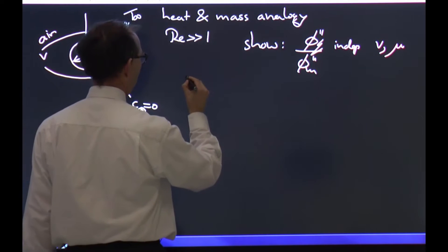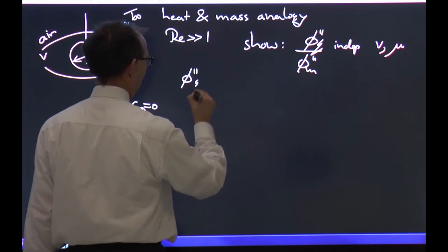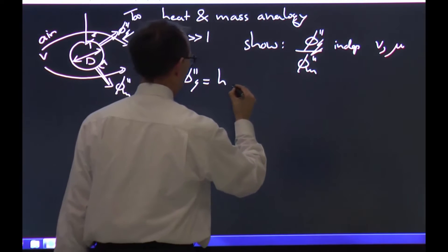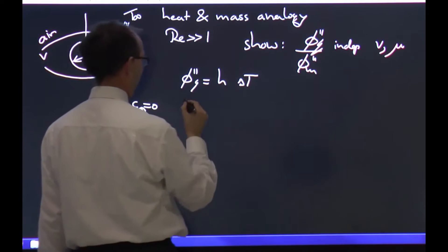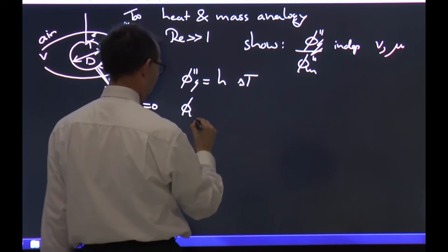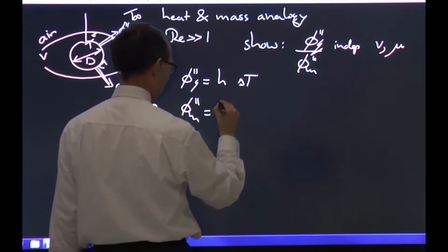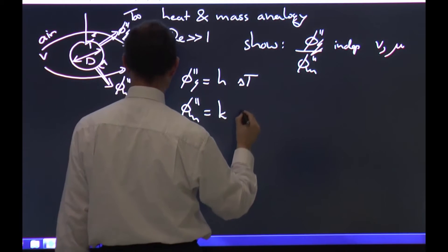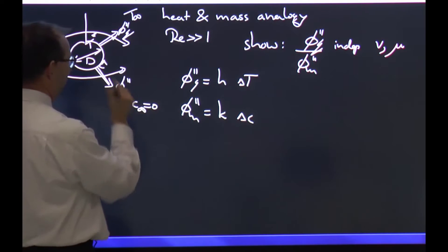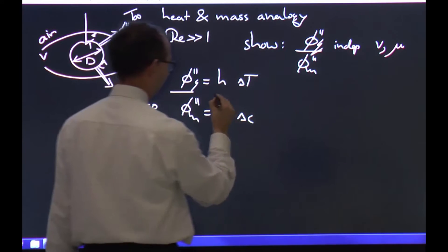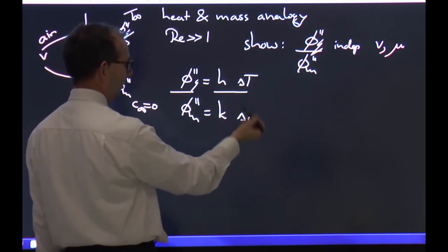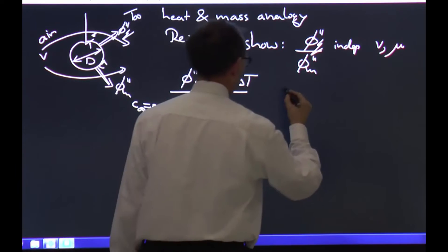In that case I can write that the heat flux equals H times the driving force delta T, being T star minus TInf. Similarly, the mass flux is K times delta C, meaning C star minus that far away. Thus I need to consider the ratio between H and K, as delta T and delta C are given.